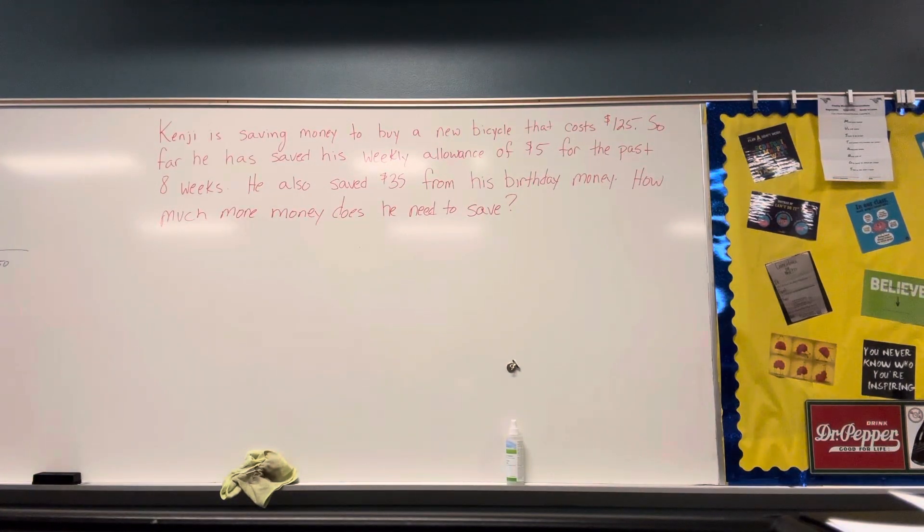Kenji is saving money to buy a new bicycle that costs $125. So far, he has saved his weekly allowance of $5 for the past eight weeks. He also saved $35 from his birthday. How much more money does he need to save?